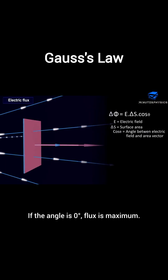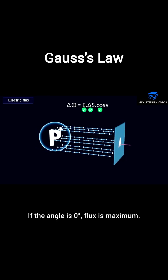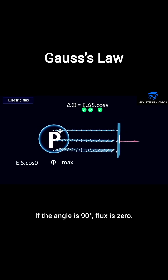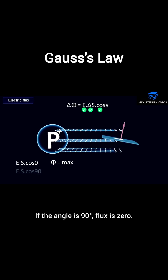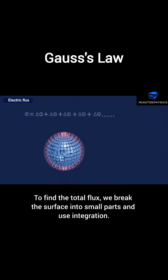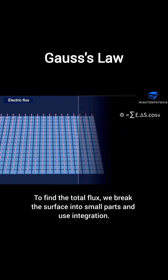If the angle is zero degrees, flux is maximum. If the angle is 90 degrees, flux is zero. To find the total flux, we break the surface into small parts and use integration.